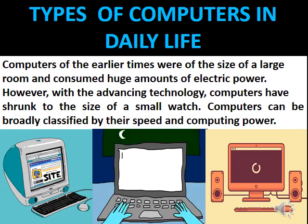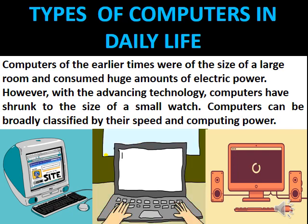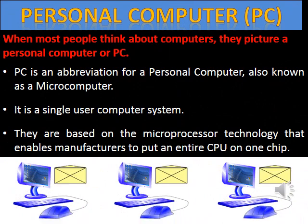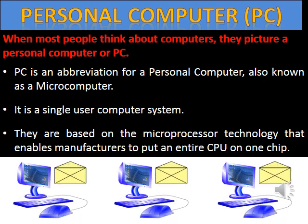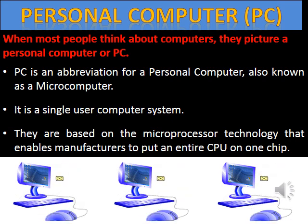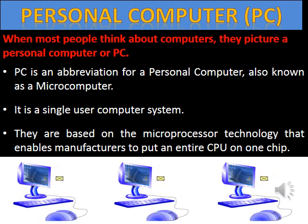Types of computer in daily life. Computers of earlier times were the size of a large room and consumed huge amounts of electric power. However, with advancing technology, computers have shrunk to the size of a small watch. Computers can be broadly classified by speed and computing power. A personal computer, or PC, is also known as a microcomputer. It is a single-user computer system based on microprocessor technology that enables manufacturers to put an entire CPU on a chip.